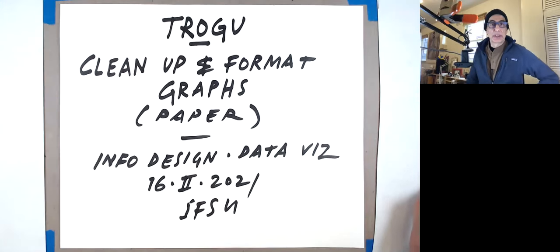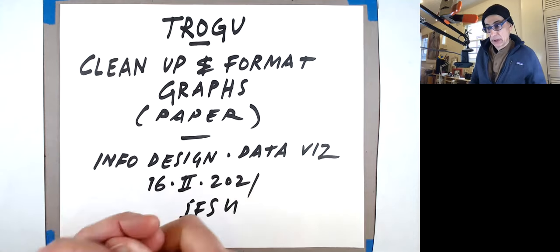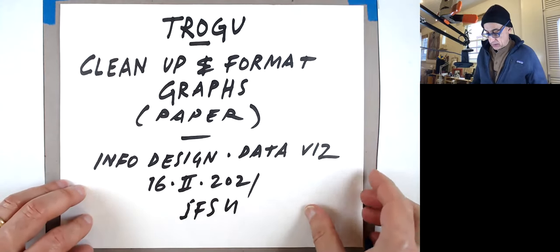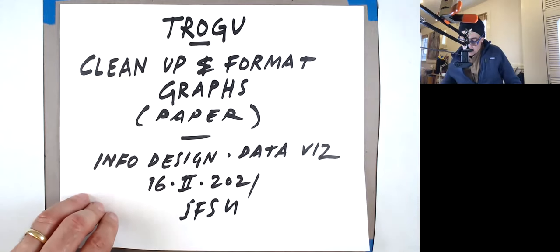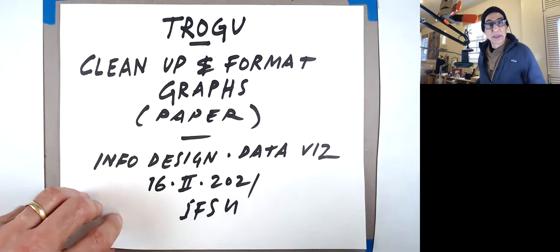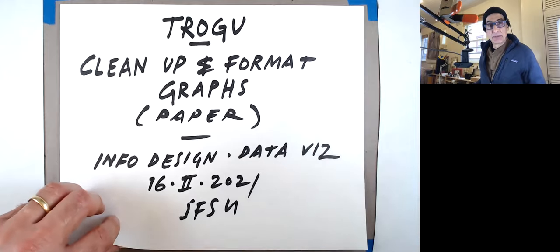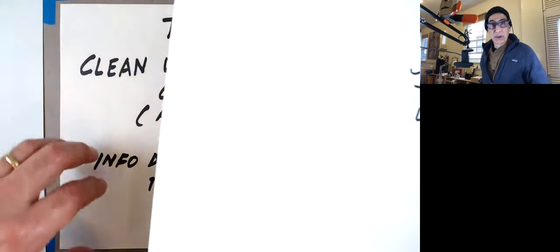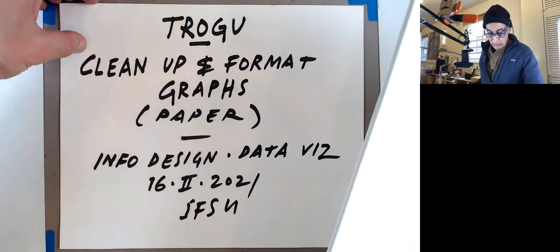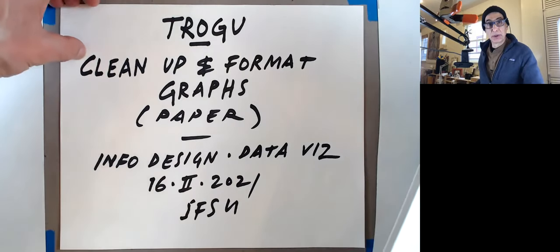Hi, everyone. This is Pino Trogo again from San Francisco State University, and this is the information design class. This video is going to be the paper companion to the screen earlier video, meaning I'm going to be showing examples on print, on printed paper. This is the third part of the assignment, the first assignment of spring 2021.